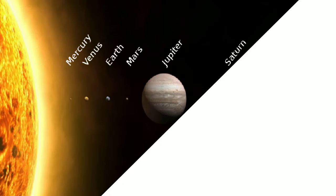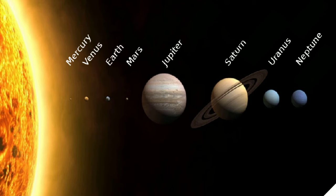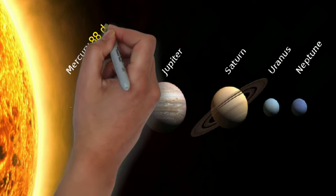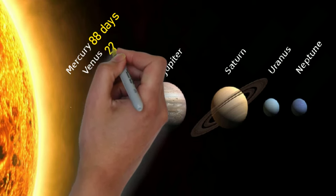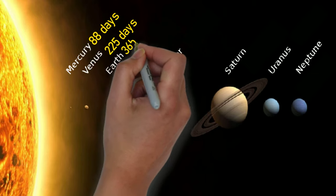Let's have a look how long each planet takes to orbit the Sun in Earth days. Mercury 88 days, Venus 225 days, Earth 365 days.